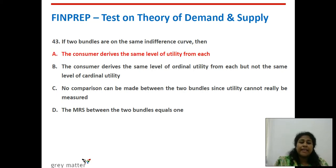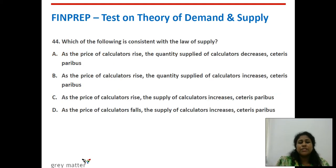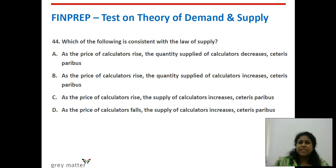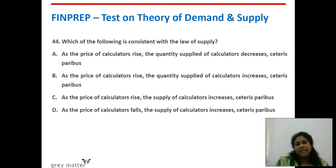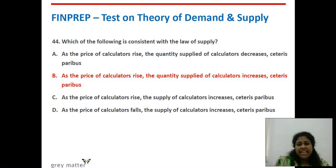Forty-fourth question: which of the following is consistent with the law of supply? The law of supply states a direct relationship between price and quantity supplied — whenever price increases, quantity supplied increases; whenever price falls, quantity supplied falls. The right answer is: as the price of calculators rises, the quantity supplied of calculators increases. All other combinations move in opposite directions.